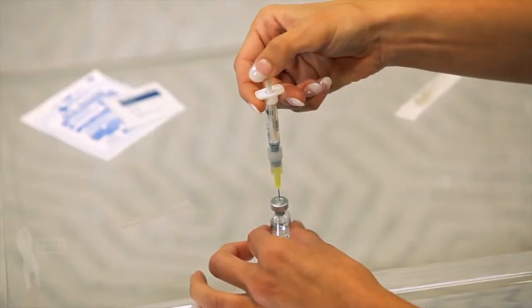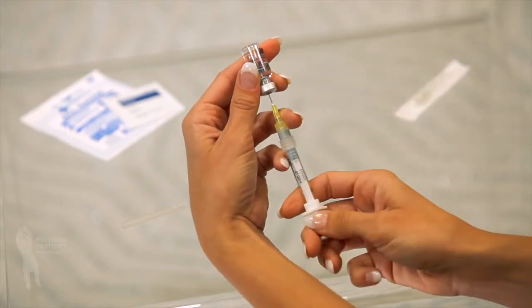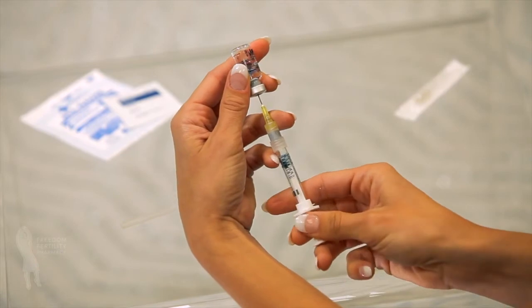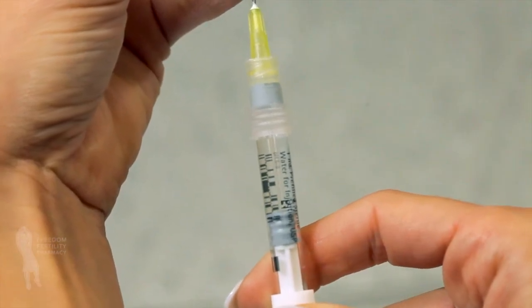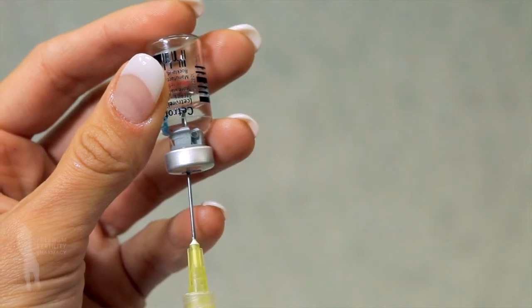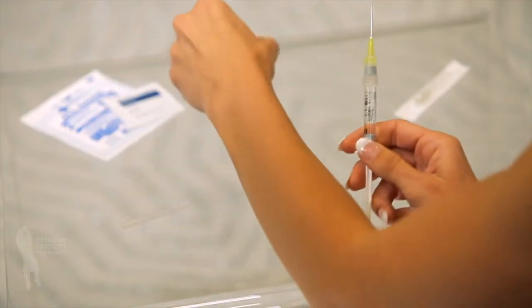Keeping the needle in the vial, invert the vial and slowly pull back the plunger until the syringe fills with the total contents of the vial. Remove the syringe needle from the vial.